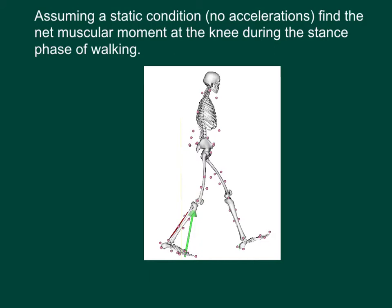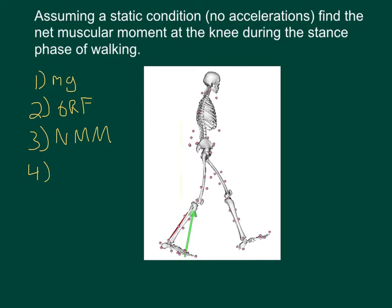Before we get started it's important to understand all the different types of forces or moments that can be acting on the model. The first type of force will be the force due to gravity — the mass of each segment times gravitational acceleration. The second type will be the ground reaction force. The third type will be forces due to muscles, which really cause moments, so we'll call that a net muscular moment. The fourth and final type will be the joint reaction force.